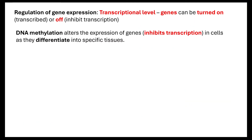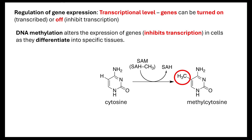We also need to understand that as cells differentiate, we do what's known as DNA methylation — we alter the expression of the gene by methylating the DNA. Where we have cytosine, we can add a methyl group, and by adding a methyl group to the cytosine, it is going to inhibit transcription. So as cells differentiate, we are switching genes off and inhibiting transcription. By modifying the DNA or by modifying the histones, we are affecting the way in which transcription can occur.